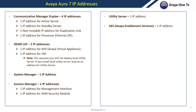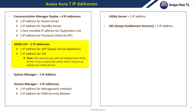Moving on to Avaya Aura 7 IP addresses. For Communication Manager duplex, you will require four IP addresses: one for the active server, one for the standby server, one non-routable IP address for the duplication link, and one IP address for your processor Ethernet. For the S8300E LSP servers, you will require two IP addresses — one for your AVP and one for CM. If you install a local utility server, reserve an extra IP address for it.